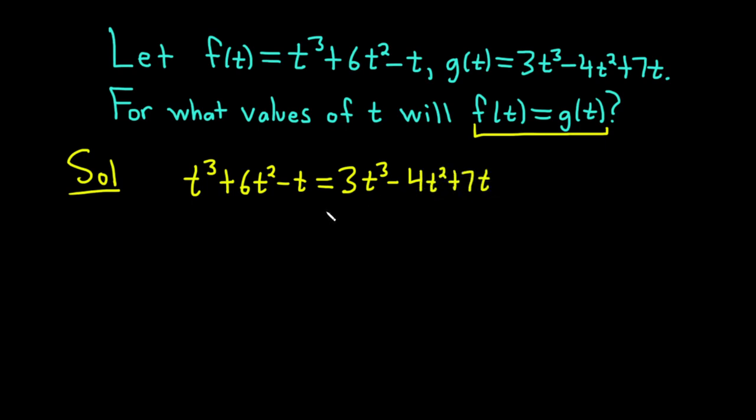We want these two functions to be equal to each other. And to solve this equation what we want to do is set it equal to zero. I'm going to subtract the t cubed from both sides, also subtract the 6t squared from both sides, and also add t to both sides.